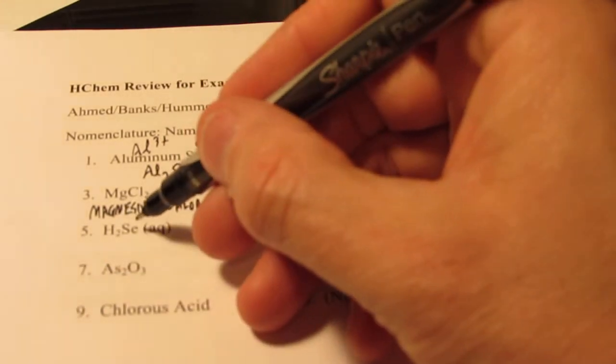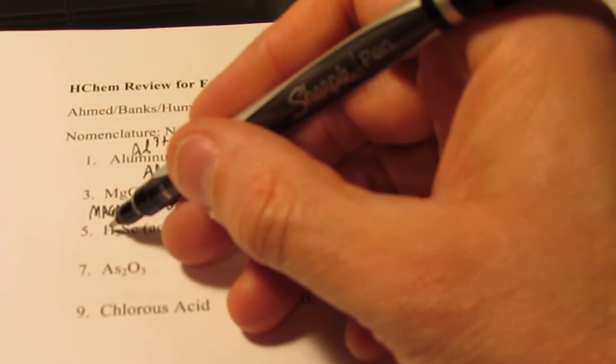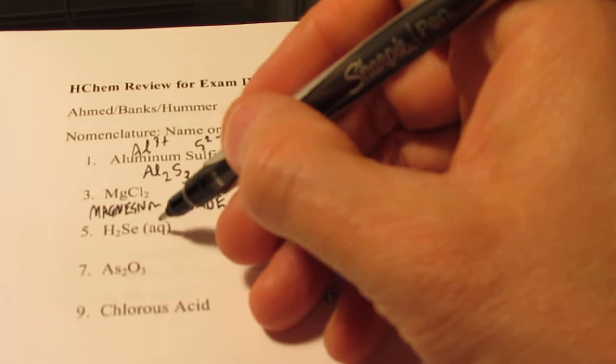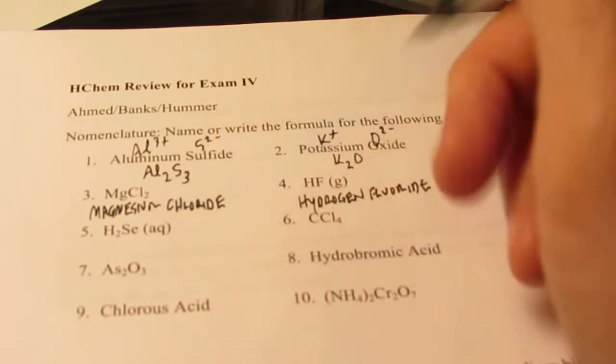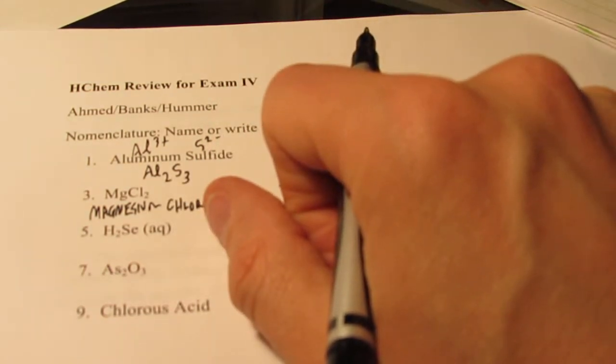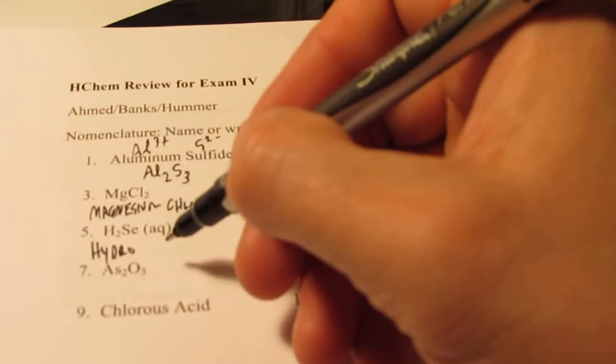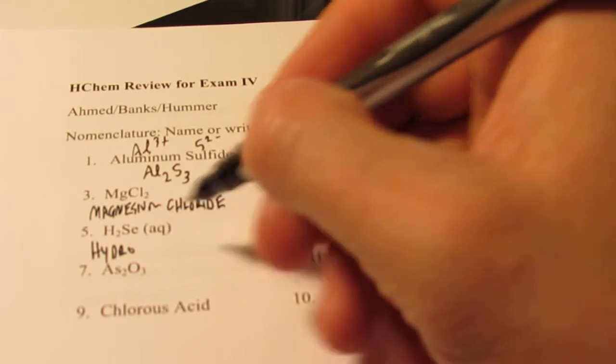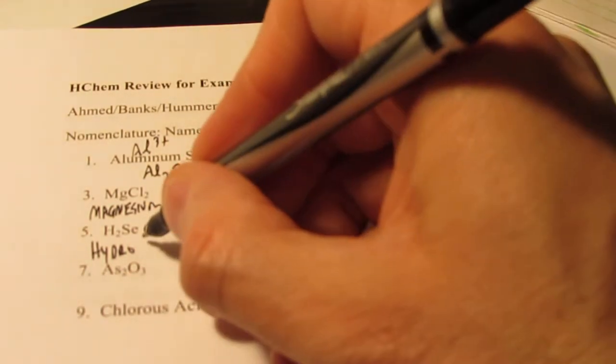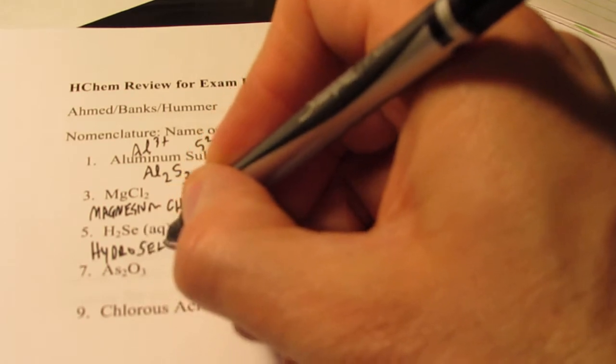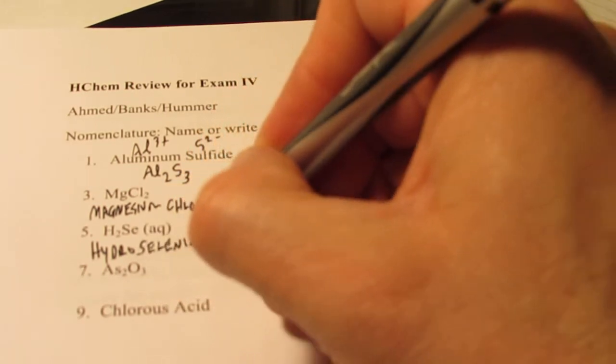Now H2Se is binary. Starts with an H. Has an AQ after it. So it's a binary acid. Do you remember what all binary acids begin with? That's right. Hydro. So we're going to start with hydro here. And then binary acids all end with ic acid. So Se is selenium, but we're going to call it hydroselenic acid.